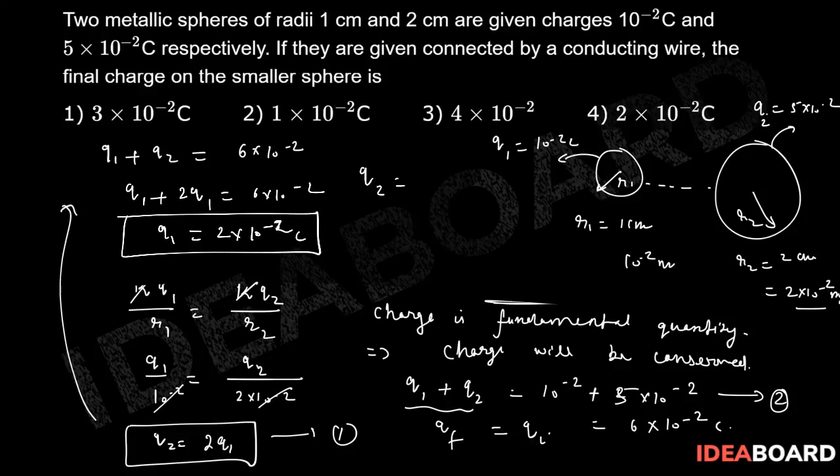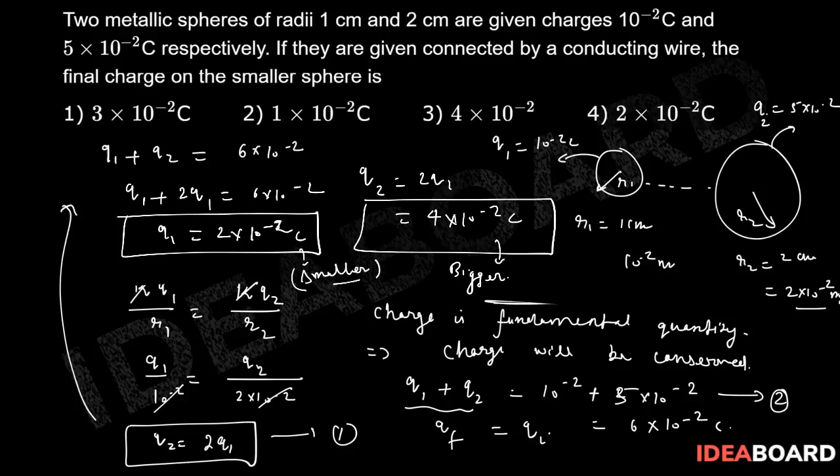From there we can calculate q2 will be 2q1, which will give us 4 into 10 to the power minus 2. This is the value of charge on the bigger one. This is for bigger one and this is for smaller one. Now in our question they asked what is the final charge on the smaller sphere? The smaller sphere will consist of 2 into 10 to the power minus 2 coulomb charge. Option number 4 should be the right choice.